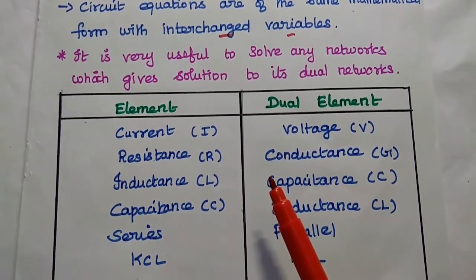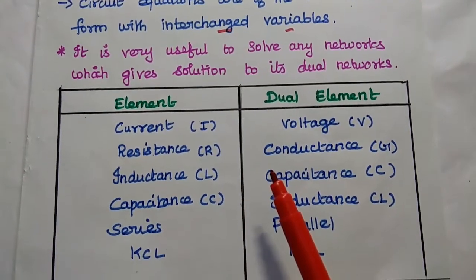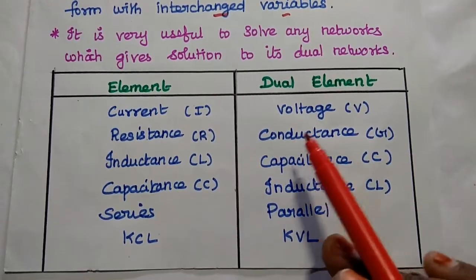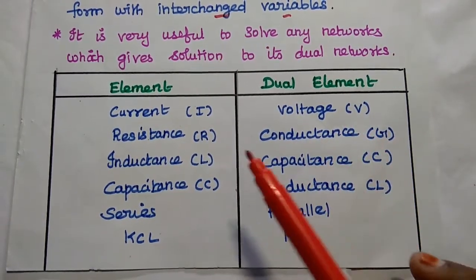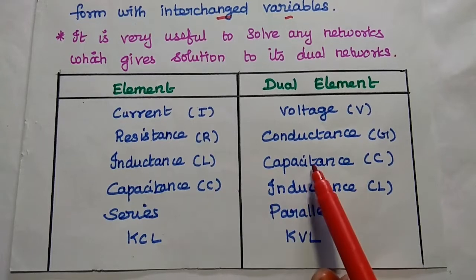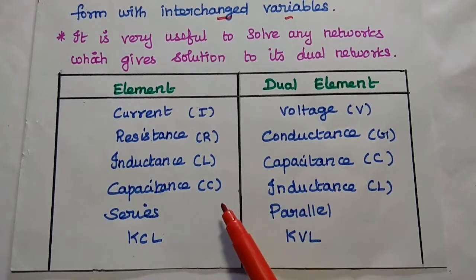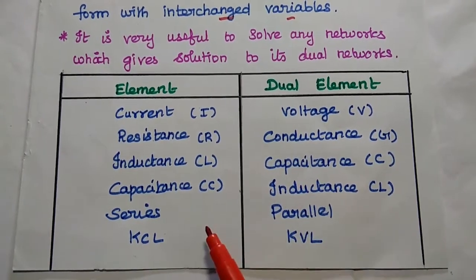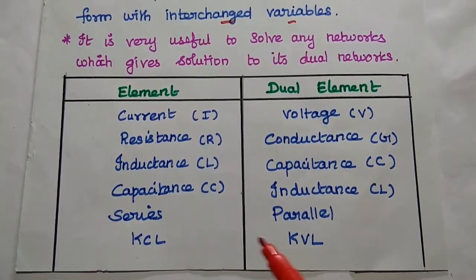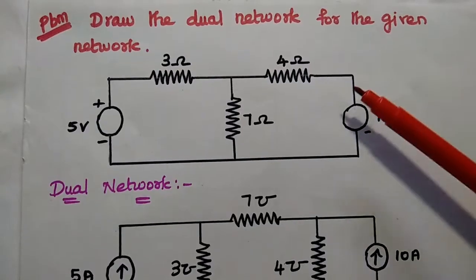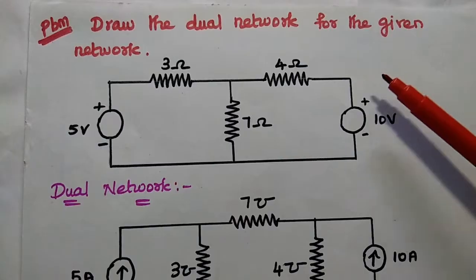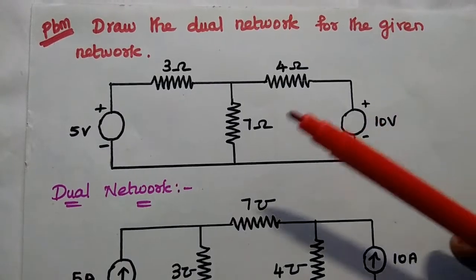Here the elements and their dual elements are given. Current can be represented as voltage in its dual network. Resistance corresponds to conductance, inductance to capacitance, capacitance to inductance, series connection to parallel connection, and KCL to KVL. Let's solve some important problems on dual networks.